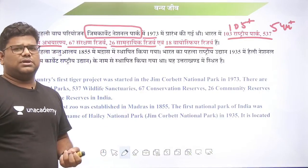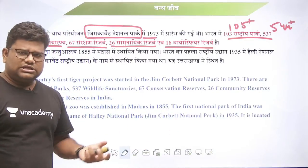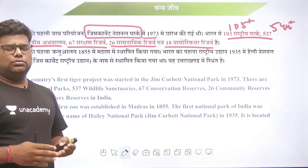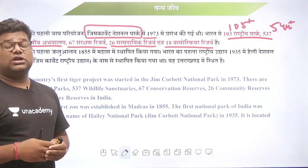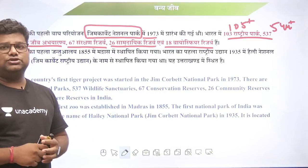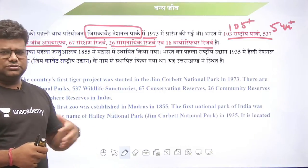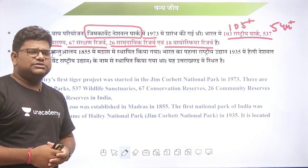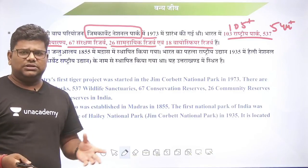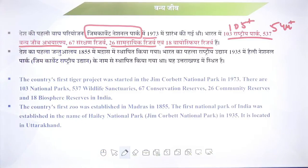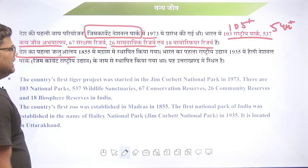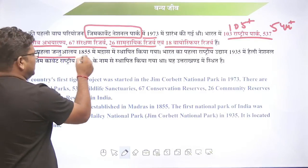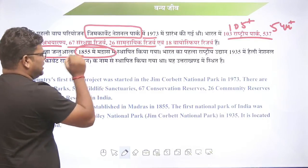1973 से National Park की सारी प्रक्रियाएं शुरू हो गईं। अभी भारत में 105 से भी जादा राष्ट्रीय पार्क, 544 से जादा वन्यजीव अभ्यारण, लगभग 67 संरक्षण रिजर्व, 26 सामुदायिक रिजर्व और 18 biosphere reserve हैं। देश का सबसे पहला zoo मदरास में 1855 में खोला गया था।